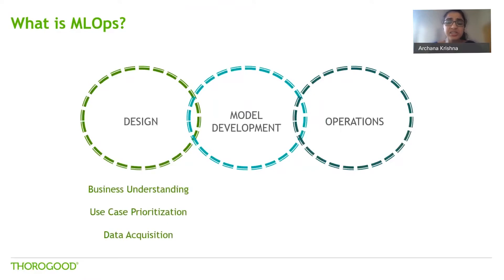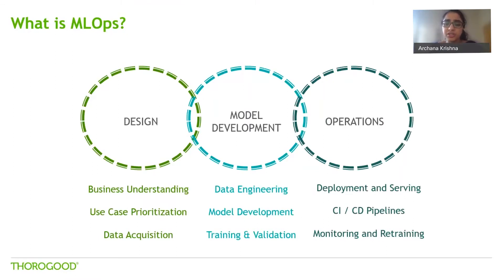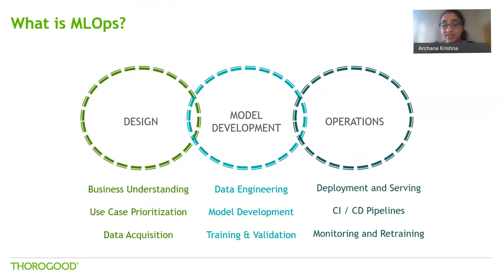The initial design phase consists of defining your use case and getting an understanding of your data. Data engineering is a critical part of model development — data scientists may take a first pass at it, but data engineers get involved to productionize these engineering processes. Data scientists then focus on developing, training, and validating the model. The third component, operations, relates to processes to publish and share machine learning models for wider consumption. An MLOps framework focuses on the intersection of data science and data engineering, combining design, development, testing, and delivery into scalable and standardized processes, largely through automation.